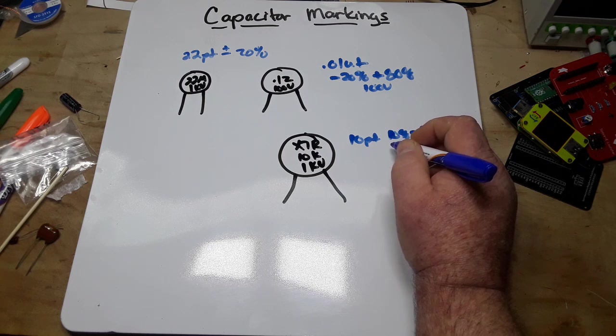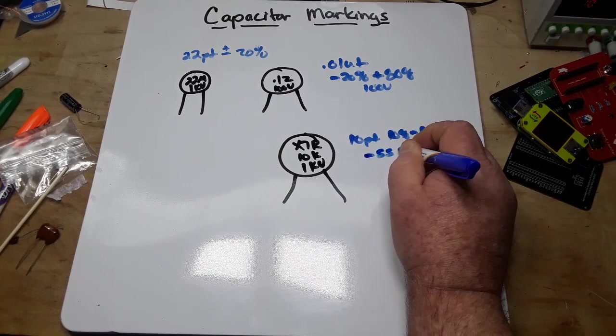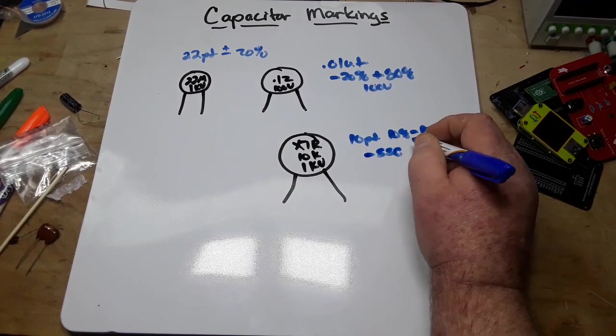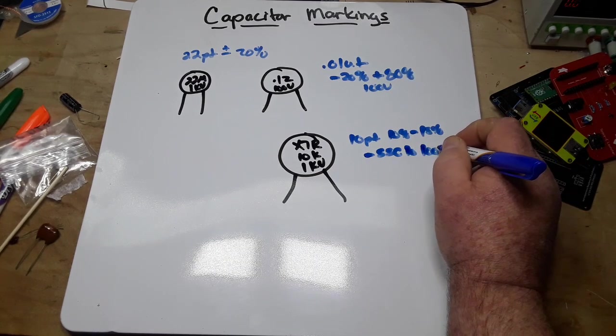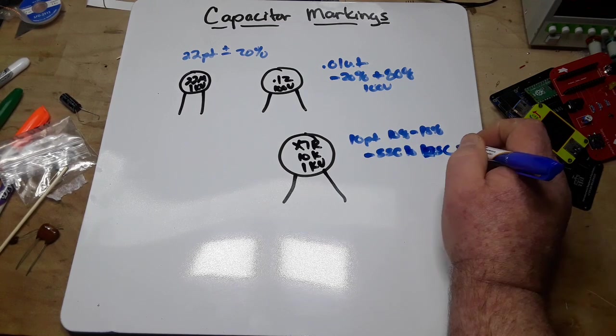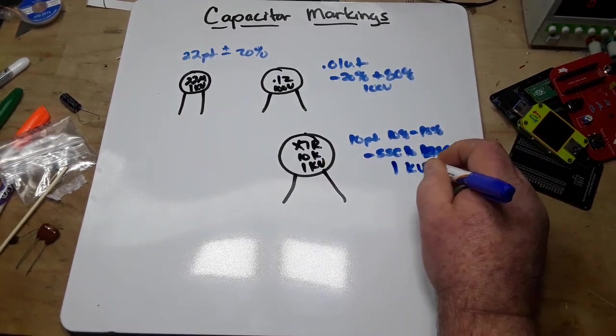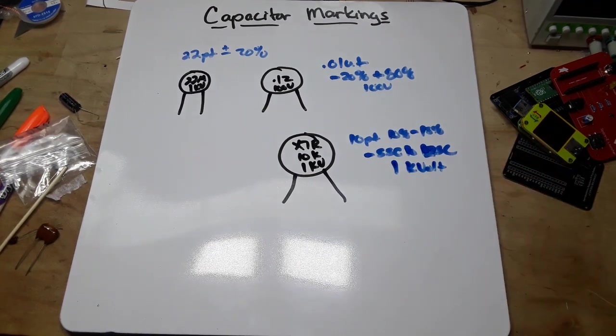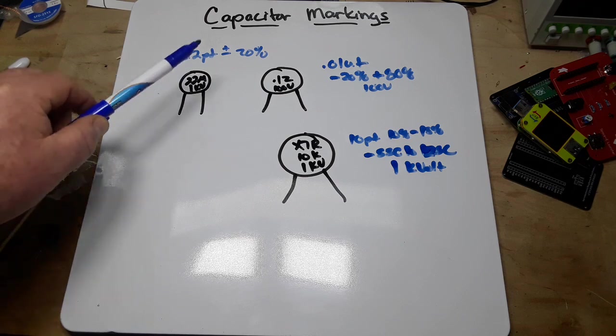And then we have the temperature code - I'll show you the temperature codes in a minute. So this one is from minus 55°C to 125°C, and 1KV is of course 1 kilovolt.